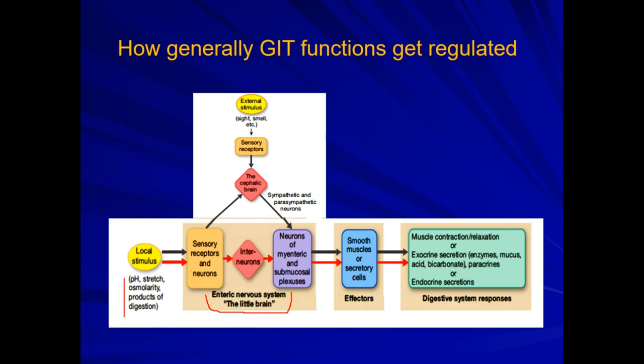The stimulation of these receptors activates the built-in plexuses, which are then responsible for stimulating either the smooth muscles or the secretory cells. This results in either muscle contraction or relaxation as desired, or stimulation or inhibition of secretion — whatever is the desired response from the digestive system.